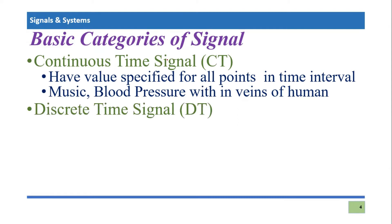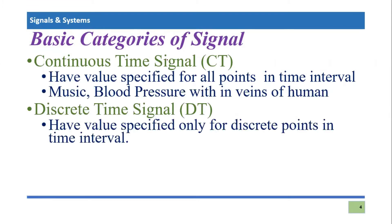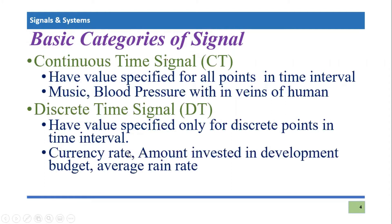The second category of signals is the discrete time signal. As its name indicates, this is a signal whose values are specified only for discrete points — only for some selected points — in the given time interval. An example could be currency rate. Currency rate is a discrete signal because the currency value on March 11th will be different from the currency value on March 12th. So it's a discrete signal.